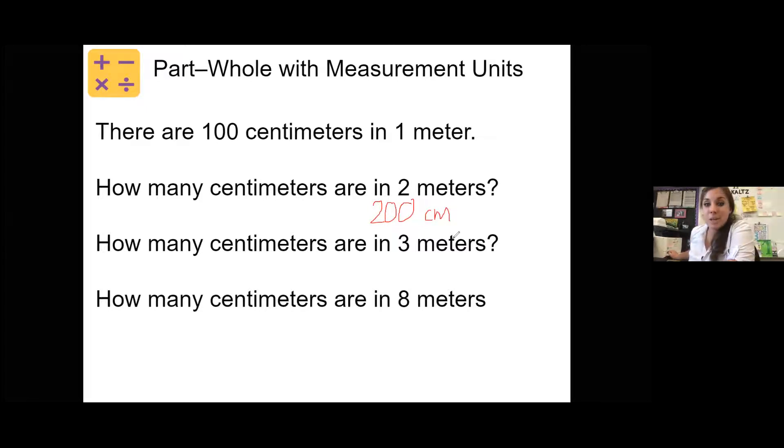So then how many centimeters are in three meters, write it down on your whiteboard. So three meters would be 100 centimeters, 100 centimeters, and another 100 centimeters, which would be 300 centimeters.